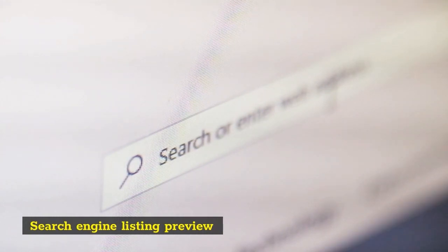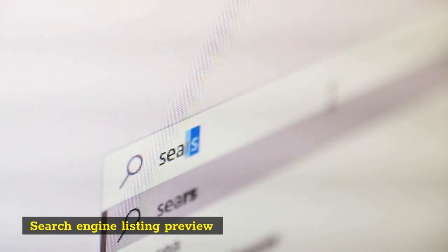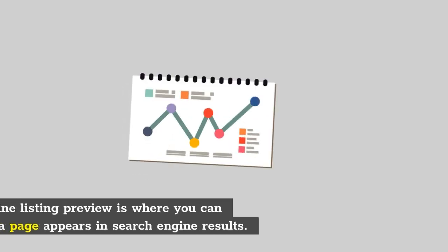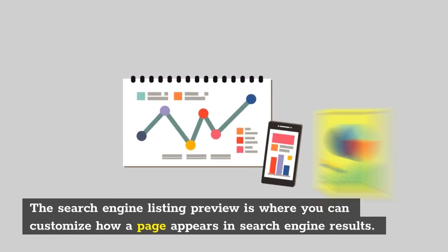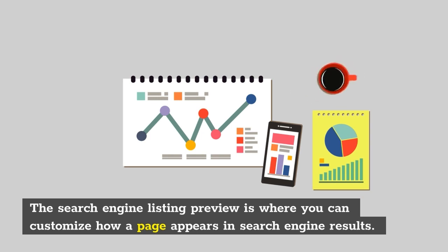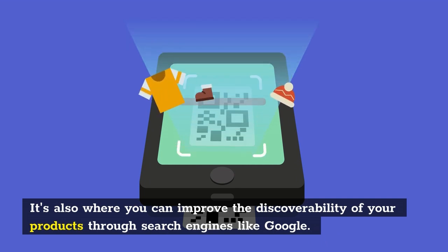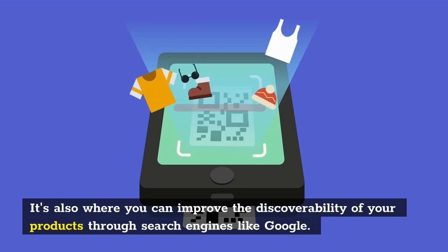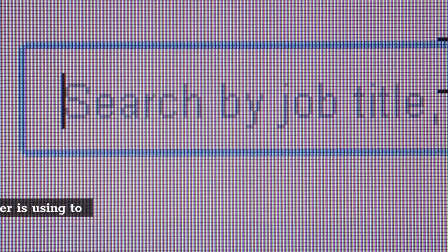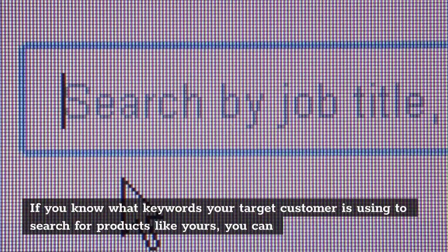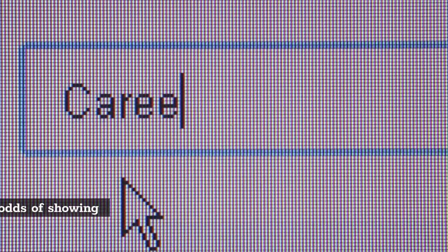The search engine listing preview is where you can customize how a page appears in search engine results. It's also where you can improve the discoverability of your products through search engines like Google. If you know what keywords your target customer is using to search for products like yours, you can work them into this section to increase your odds of showing up in search results over time.